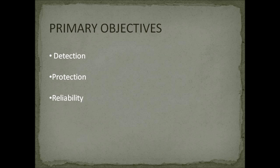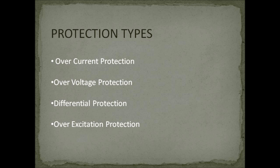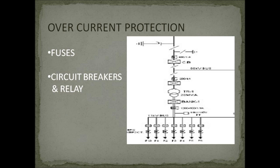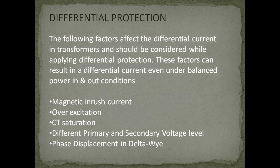The primary objectives of a transformer protection scheme are: detection — to detect internal and external faults with high sensitivity; protection — against abnormal conditions like over-excitation, over-voltage, and overheating; and reliability — providing backup protection in case of through faults. The types of protection used for transformers include over-current protection, over-voltage protection, differential protection, and excitation protection. Fuses are used as primary protection for transformers below 10 MVA, while circuit breakers are used for high power transformers. Fuses are typically set to 150% to 200% of the maximum magnetizing inrush current.